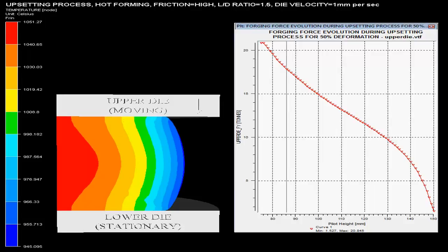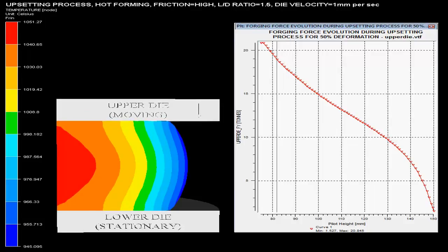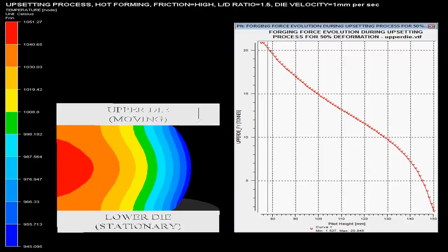The scale on the left side shows the temperature change in the billet during the process.